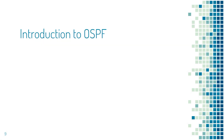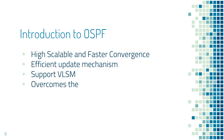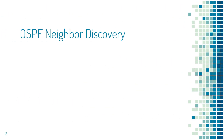OSPF is highly scalable and has faster convergence. Updates are sent efficiently using multicast. It can support VLSM, which stands for Variable Length Subnet Masking. It overcomes the limitation of legacy protocols like RIP or IGRP. RIP has a metric of hop count — it can have a maximum of 15 hops, and anything beyond 15 hops is considered unreachable.